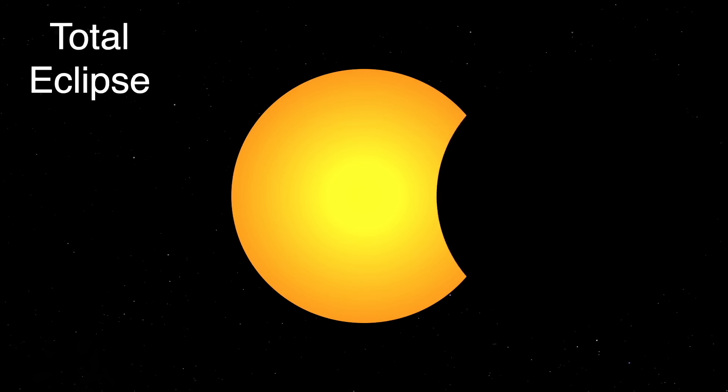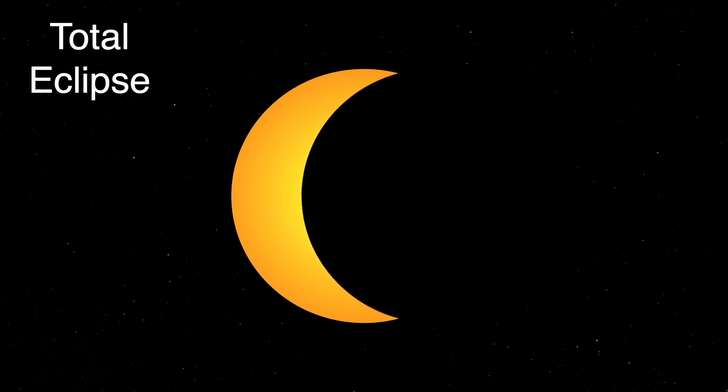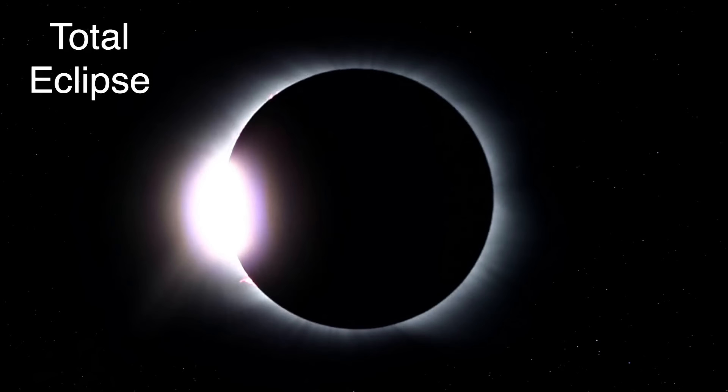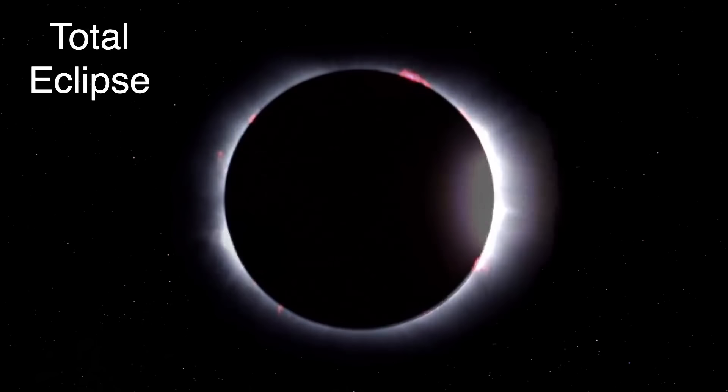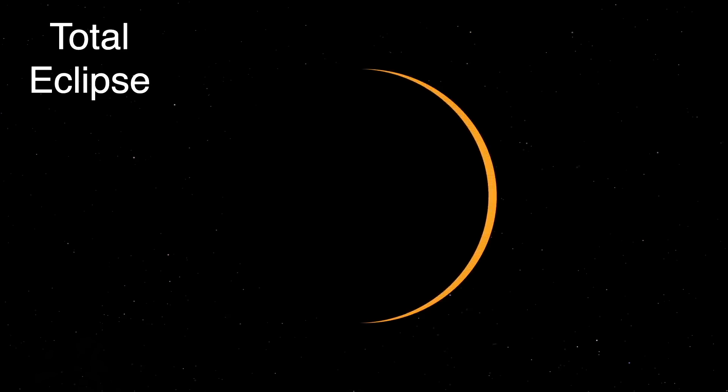The last and most spectacular type of eclipse is the total eclipse. Here, the moon can cover the entire disk of the sun, and we see all the special effects the sun has to offer. The diamond ring, Bailey's beads, the corona, and an eerie darkness in the middle of the day.